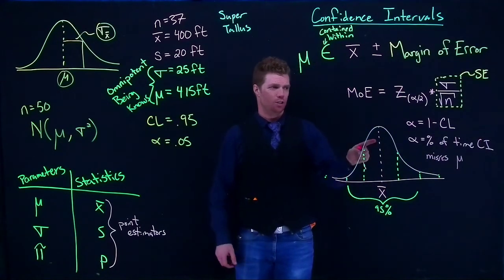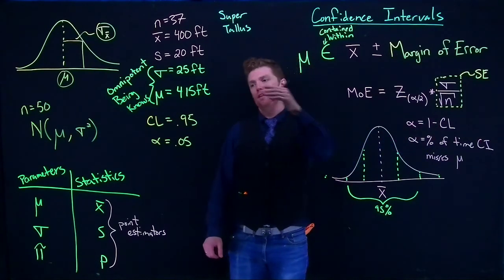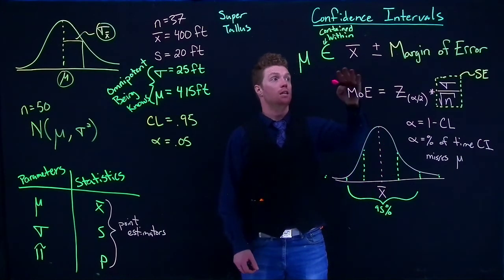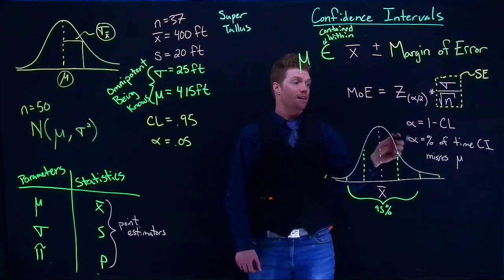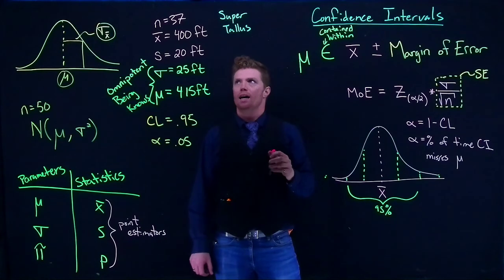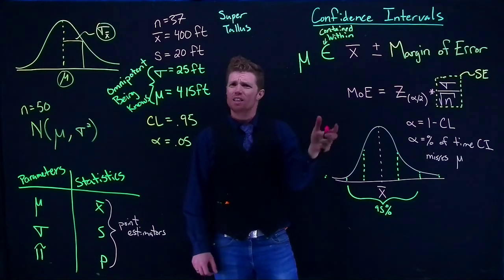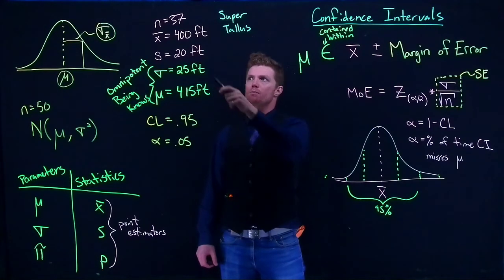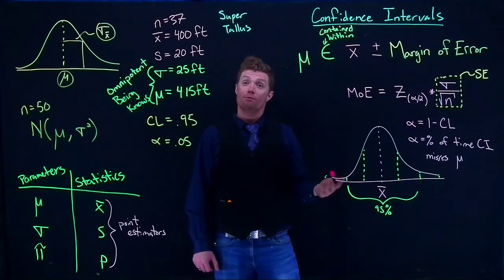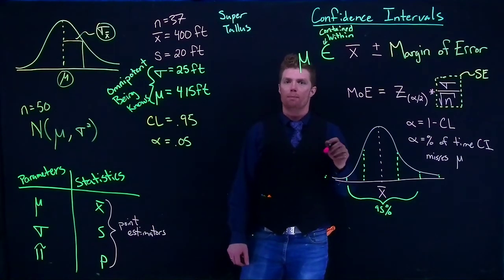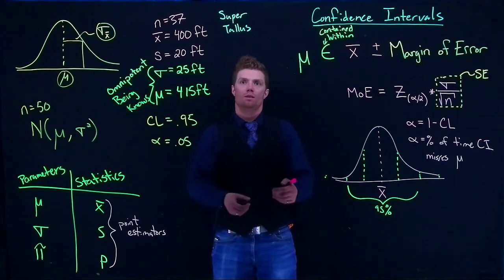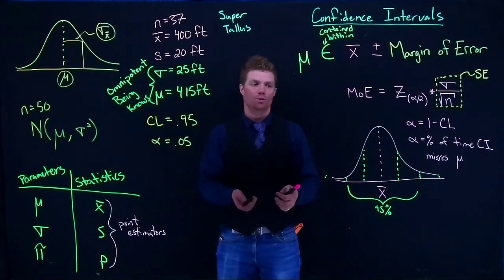If we are 95% confident that our true population mean is contained within our confidence interval, it also means that 5% of the time — when we do samples like this — our confidence interval misses. If I take another 37 trees and build a new confidence interval, the mean might be 405 feet instead of 400. But if I repeat this over and over, 95% of the time my confidence interval would in fact capture the true population mean, and 5% of the time it would miss.